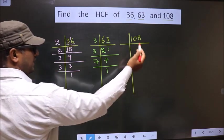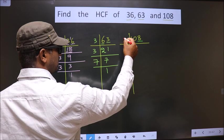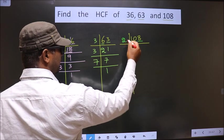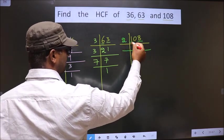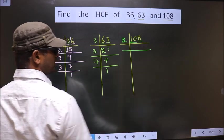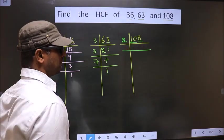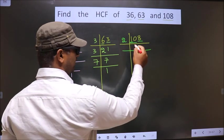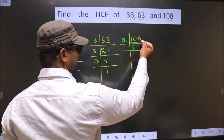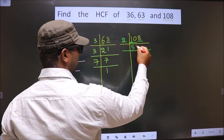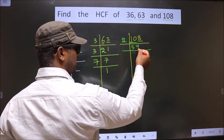Now here, the last digit is 8, which is even. So we take 2 here. First number is 1, which is smaller than 2, so we take 2 numbers — that is 10. When do we get 10 in the 2 table? 2 fives is 10. Next number is 8. When do we get 8 in the 2 table? 2 fours is 8.